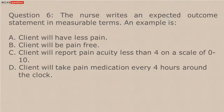Answer: A. Question 6. The nurse writes an expected outcome statement in measurable terms. An example is: A. Client will have less pain. B. Client will be pain-free. C. Client will report pain acuity less than 4 on a scale of 0–10. D. Client will take pain medication every 4 hours around the clock.